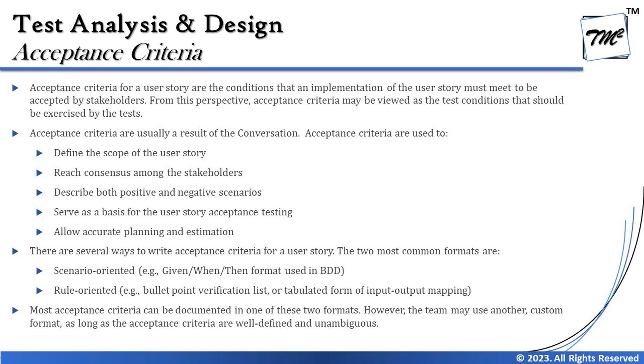Acceptance criteria are used to define the scope of the user story, reach consensus among the stakeholders on whether something can be achieved, describe both positive and negative scenarios, serve as a basis for user story acceptance testing — which will in turn help business users to conduct acceptance testing — and allow accurate planning and estimation. Given very precise acceptance criteria, we know exactly how much time it will take to achieve them. I think acceptance criteria's significance is being taught here — why it is important to write acceptance criteria for every single story.